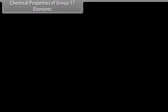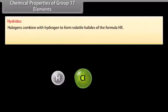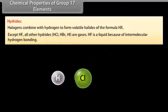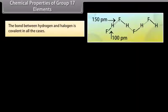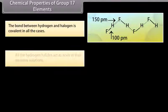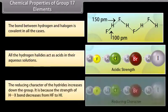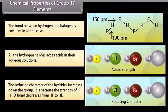Chemical properties — hydrides: Halogens combine with hydrogen to form volatile halides of formula HX. Except HF, all other hydrides HCl, HBr and HI are gases; HF is a liquid because of intermolecular hydrogen bonding. The bond between hydrogen and halogen is covalent. All hydrogen halides act as acids in aqueous solution, ionizing to give H⁺ and halide ion X⁻. The reducing character of the hydrides increases down the group because the strength of the H–X bond decreases from HF to HI.